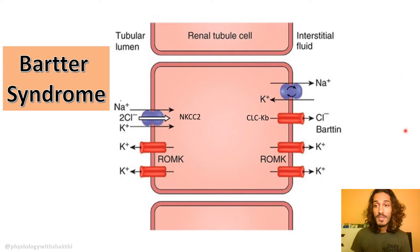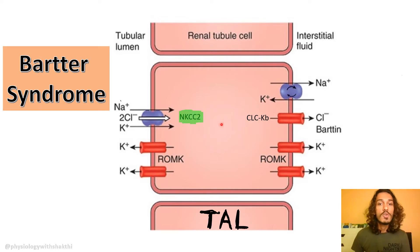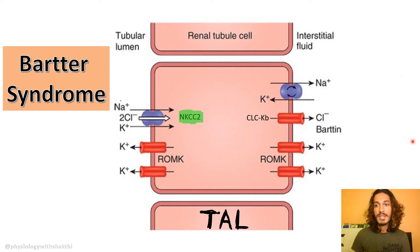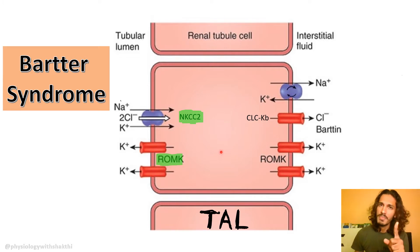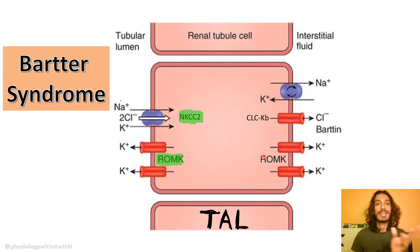Bartter syndrome affects your thick ascending limb of the loop of Henle. We have to understand what the normal transporters are in this segment. We have the sodium-potassium-2-chloride channel, through which sodium, 2 chloride, and potassium go. We also have the ROMK, that is the renal outer medullary potassium channel. Apart from ROMK, we also have the big K or large potassium channels. ROMK is present both in the apical as well as the basolateral part.